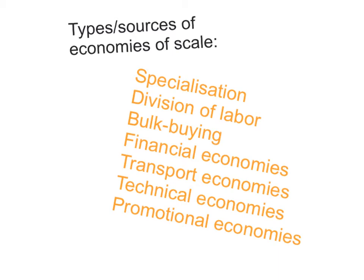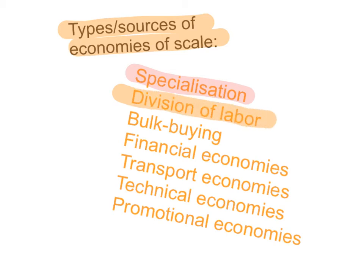Now let's look at what causes economies of scale — the sources and types. First, specialization: as a firm grows bigger, managers and workers become more specialized, leading to more division of labor, which causes the firm to be more efficient. Second, bulk buying: when a firm grows bigger it can order supplies in bulk and negotiate discounts with suppliers, which generates savings. Remember, economies of scale refers to savings as a result of growing bigger.